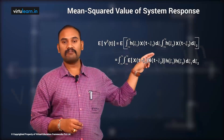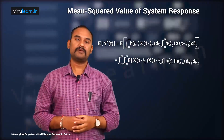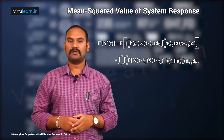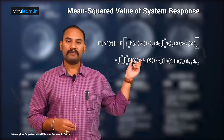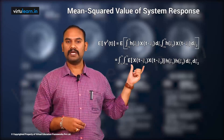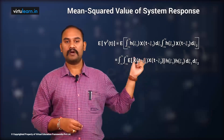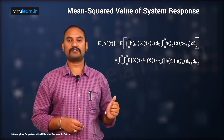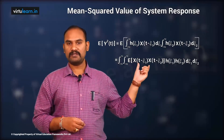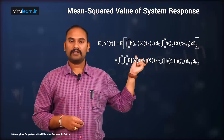After the mean value of the response, we are interested in the mean square value of the system response. The input is the same; we first calculated the response y(t), then the mean value E[y(t)]. Now we are interested in the mean square value E[y²(t)] — the expected value of the square of the response.